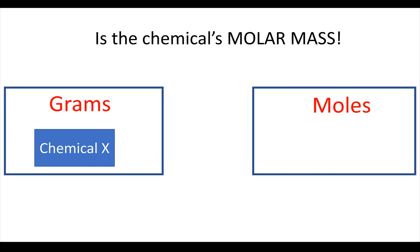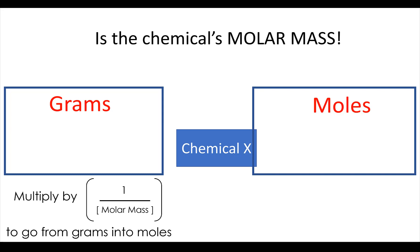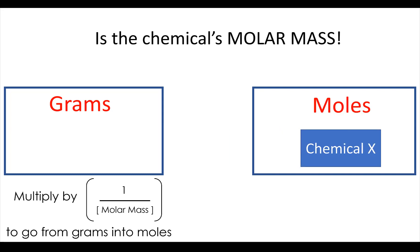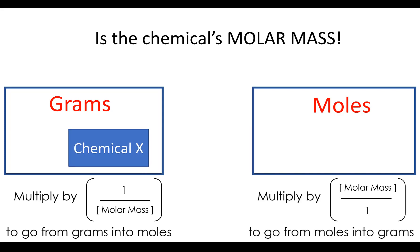In order to take a gram representation of a chemical and figure out how it would be represented in moles, you divide by the molar mass, which is the same as multiplying by 1 over the molar mass. The way that you go from moles back into grams is you multiply by the molar mass, which is the same as the molar mass over 1. I'm making this a fraction because it makes it easier for us to actually use these things practically.